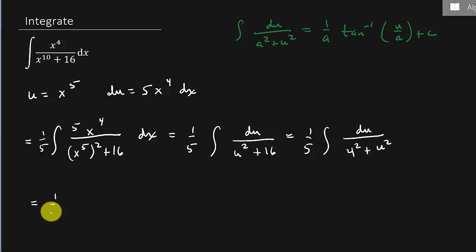And so this is going to be one fifth. Now what's the integral of this? Well, a is 4. All right, so that's going to be times one fourth inverse tangent of u over 4 plus c.